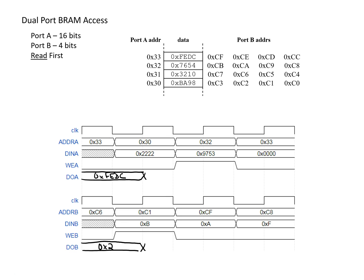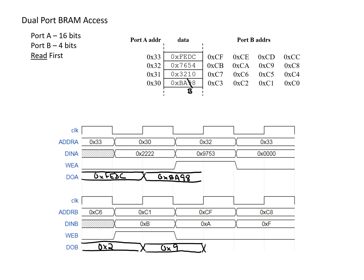Now going to the next cycle. Previously we were doing the write first, but now we're in read-first mode, so we do reads first. For port A, we're looking at address 0x30, which has a value of BA98. For port B, we're looking at address C1, which has a value of 0x9. Since port B also has write enable high, we write the value of B to address C1 — so this 9 is going to become B — but because we're in read-first mode, we read the old value of 9 before changing it.